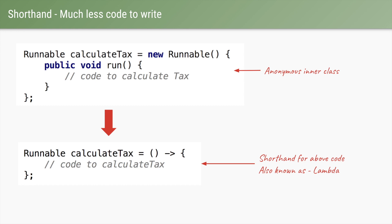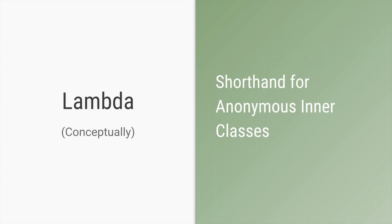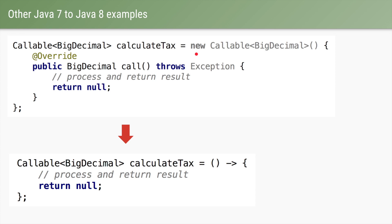Using lambdas we can shorten this code. We can skip the new Runnable declaration and everything, and just write the lambda from there onwards. The below example acts as a shorthand for the anonymous inner class, and this is called a lambda. We just have the round brackets of the run method, an arrow symbol, and then the code we want to execute. So conceptually, lambdas are shorthand for anonymous inner classes.